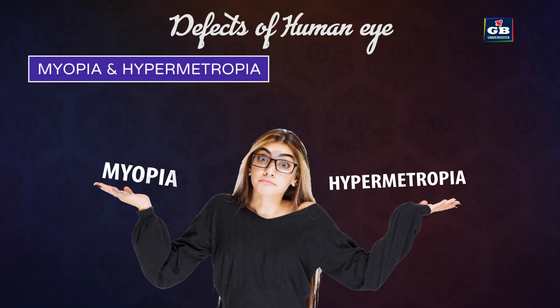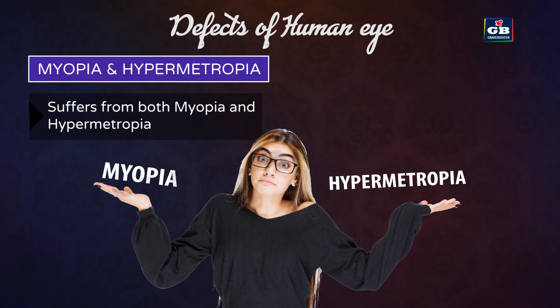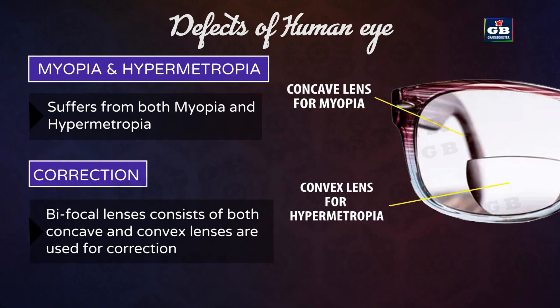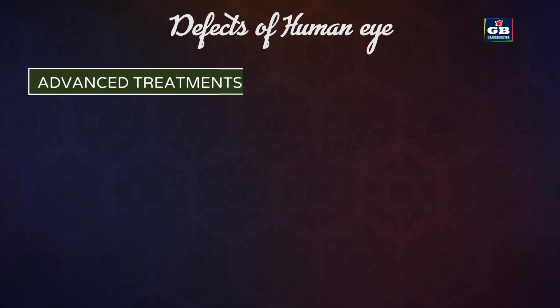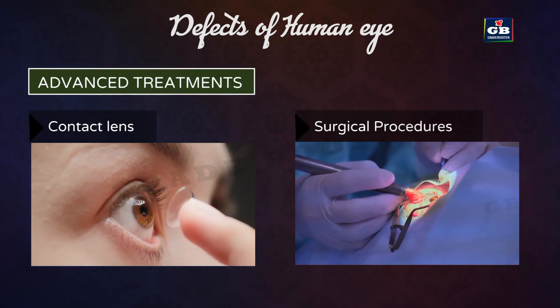Some people suffer from both myopia and hypermetropia; in such cases, bifocal lenses are needed for proper vision. A common type of bifocal lens consists of both concave and convex lenses: the upper portion is a concave lens that helps with distant vision, whereas the lower part is a convex lens that facilitates near vision.